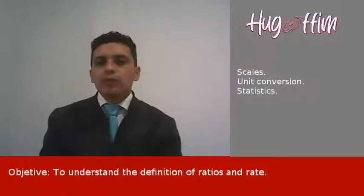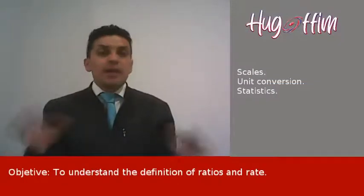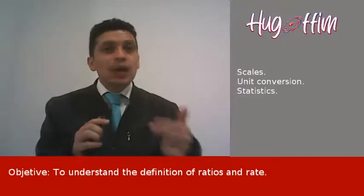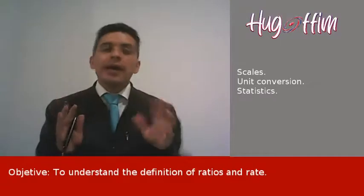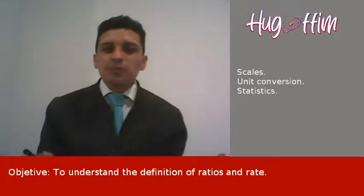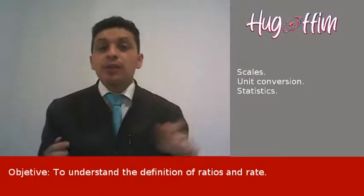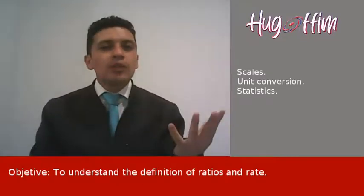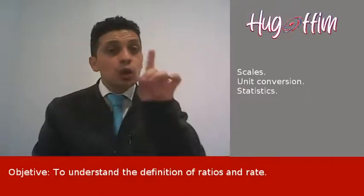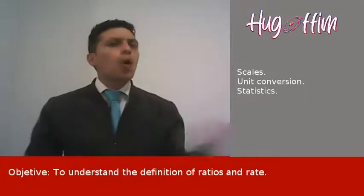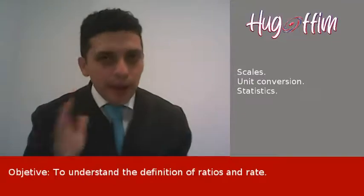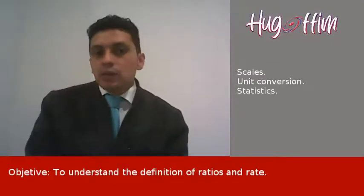You may ask: why is it called a unit rate? Because it's related only to one unit of the second variable. So when you say 1.5 kilometers per hour, that is a unit rate. One important unit rate that you use every day when dealing with money is the unit price.